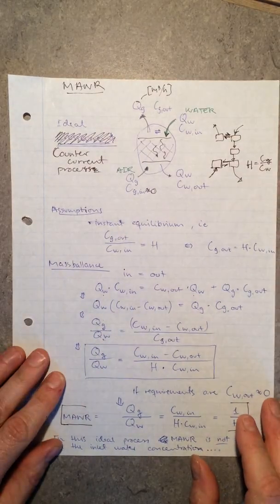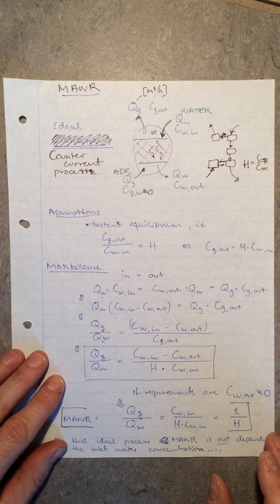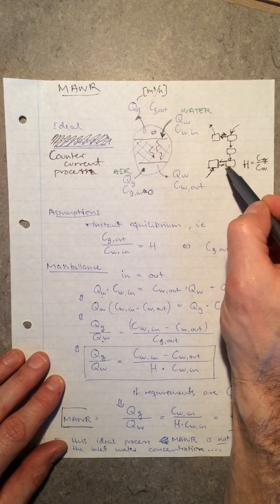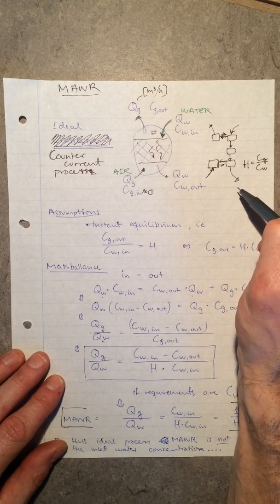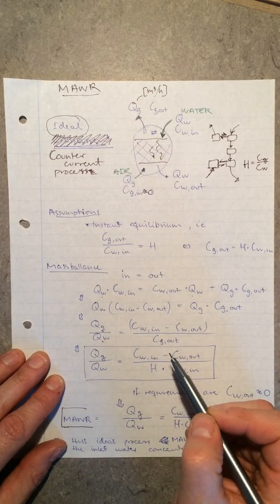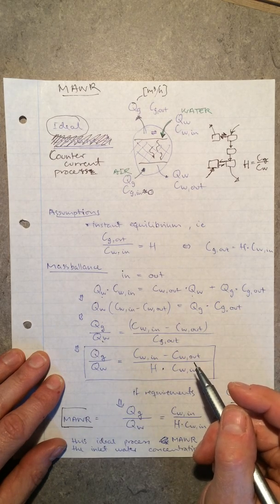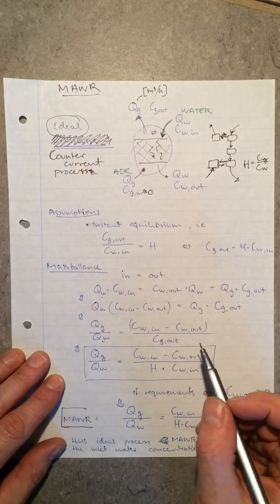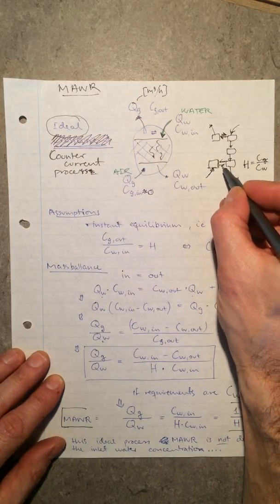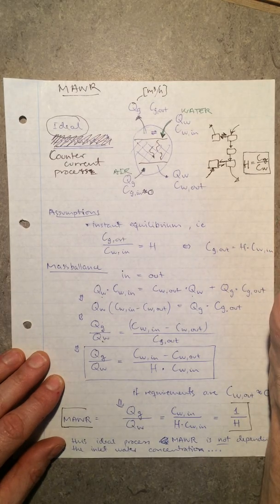Now I will describe how we can design a stripping vessel or an aeration vessel. We've looked into the two-film theory that tells us what determines the mass transfer of a substance from a water phase to a gas phase or vice versa. Now I'm trying to look at how I can figure out how much flow of air I should have if I want to strip off something from a certain flow of water. This is an ideal situation, where we say there is equilibrium between gas and water in this process.